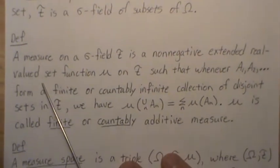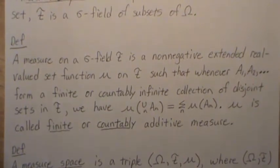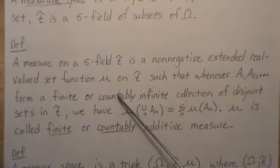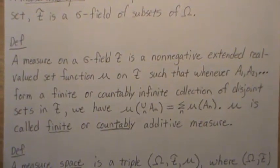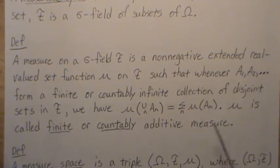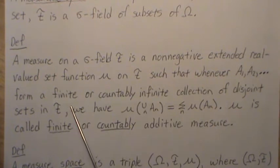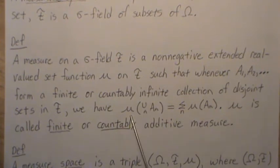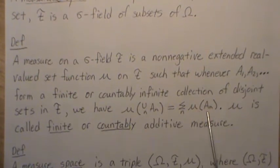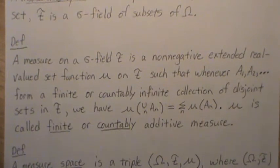Another definition: a measure on a field F is a non-negative extended real-valued set function μ on F such that whenever the sets A₁, A₂, ... form a finite or countably infinite collection of disjoint sets in F, we have that the measure of the union of the sets is equal to the sum of the measures of each individual set. μ is called finite or countably additive measure.